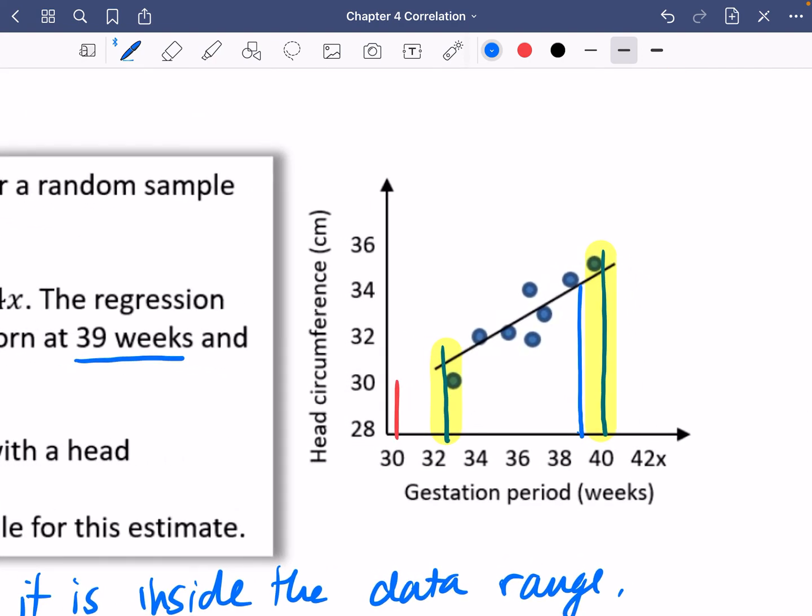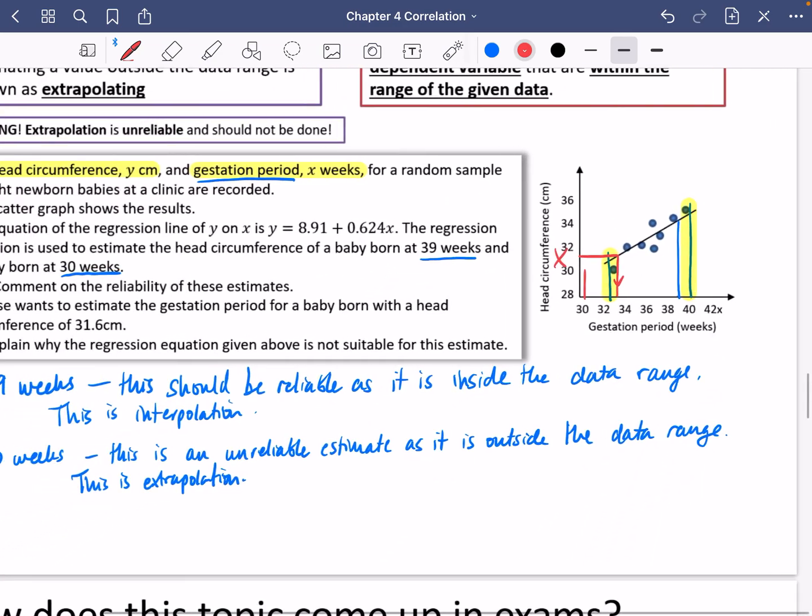She's wanting to go and make a prediction by predicting here and saying what it is in this direction. But you should not do that because it is going from the dependent variable to the independent variable.